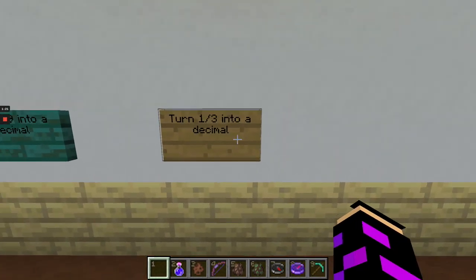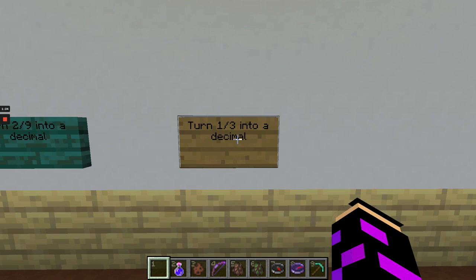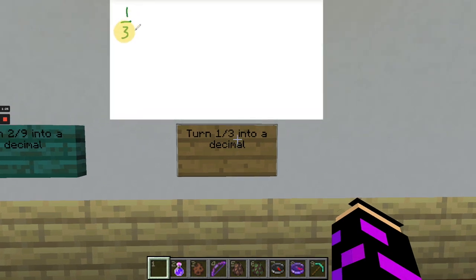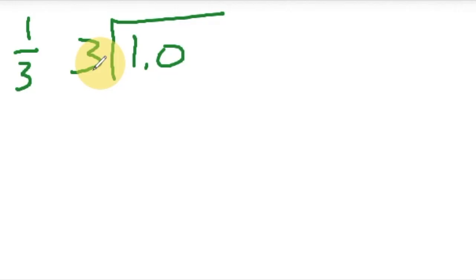Let's try this one. Turn one third into a decimal. Let's try that one. One third. And again, we know how to do this. One third really just means 1.0 divided by 3. 1 divided by 3.